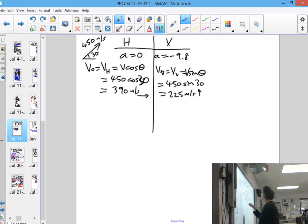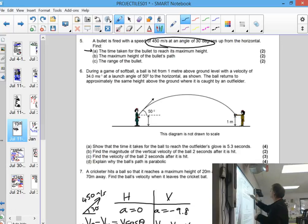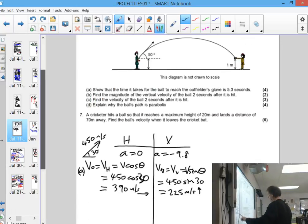And this one here is close enough to 390 m/s. It's going sideways. So that's part A done. Break up the velocity into its horizontal vertical components.